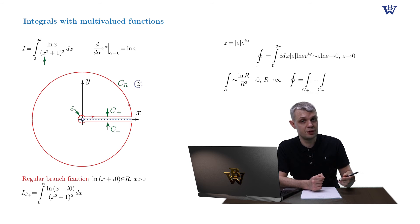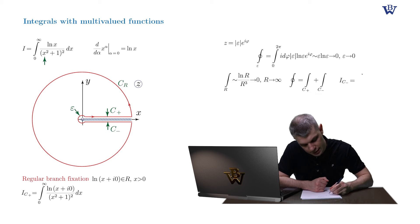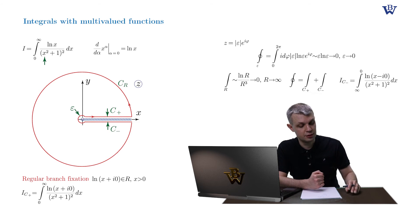Let's write down the detailed expression for our lower bank integral c minus. So it's from plus infinity to zero log of (x minus i zero) divided by our denominator. So let's express the lower bank integral via our original integral as we did with the finite segment integral in our first example. In order to do so...